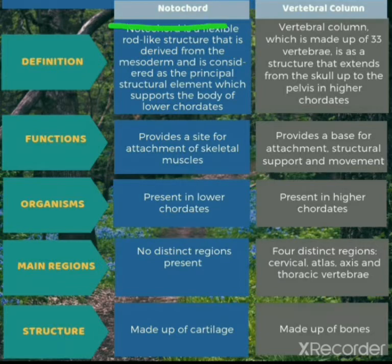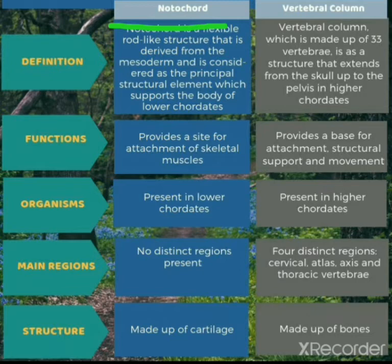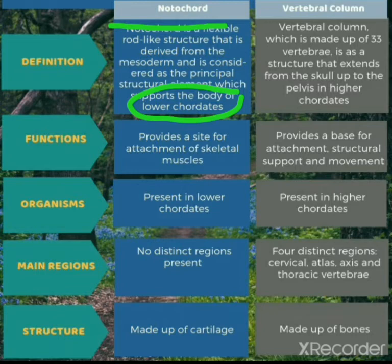The notochord is a flexible rod-like structure derived from the mesoderm. All chordate organisms have three embryonic layers during embryonic development: ectoderm, endoderm, and mesoderm — the mesoderm being the middle layer. The notochord is formed by the mesoderm and is considered the principal structural element supporting the body of lower chordates. It persists throughout life in lower chordates.